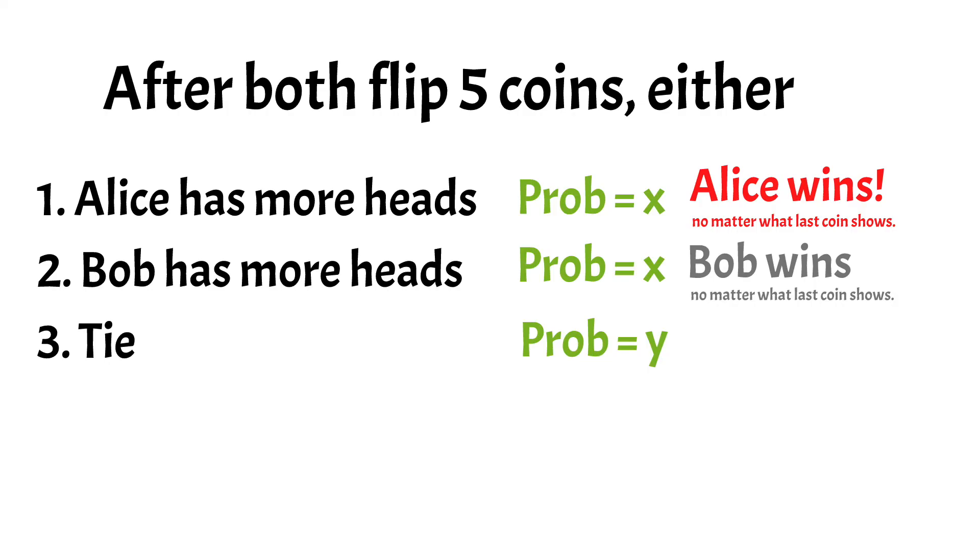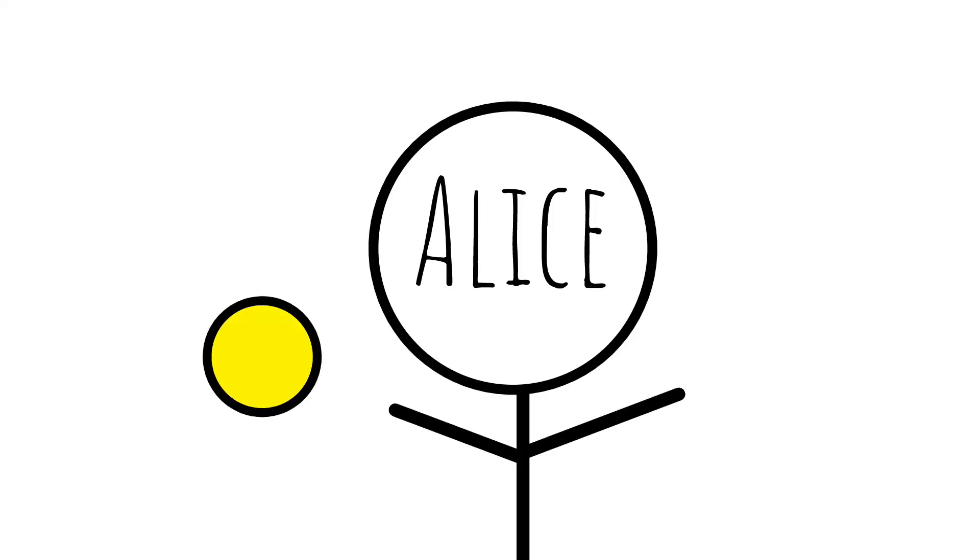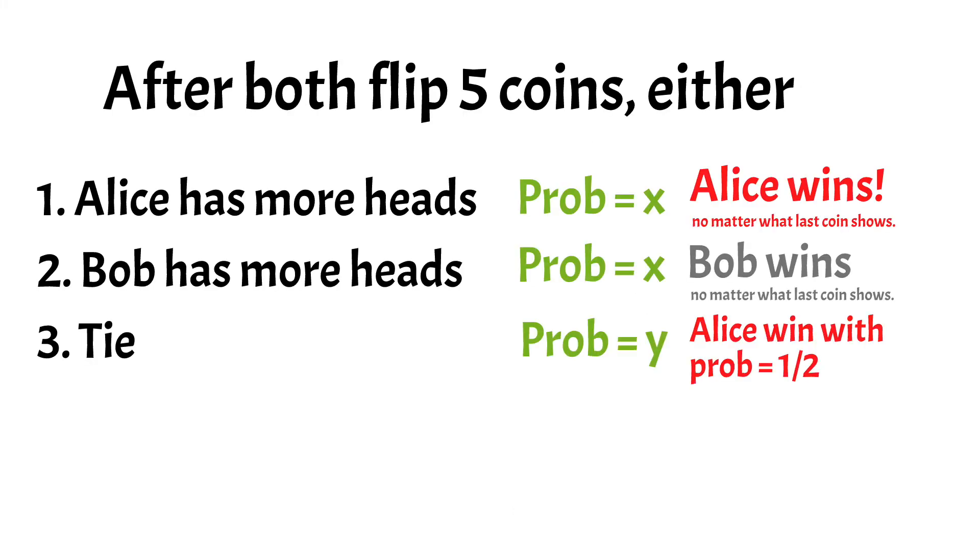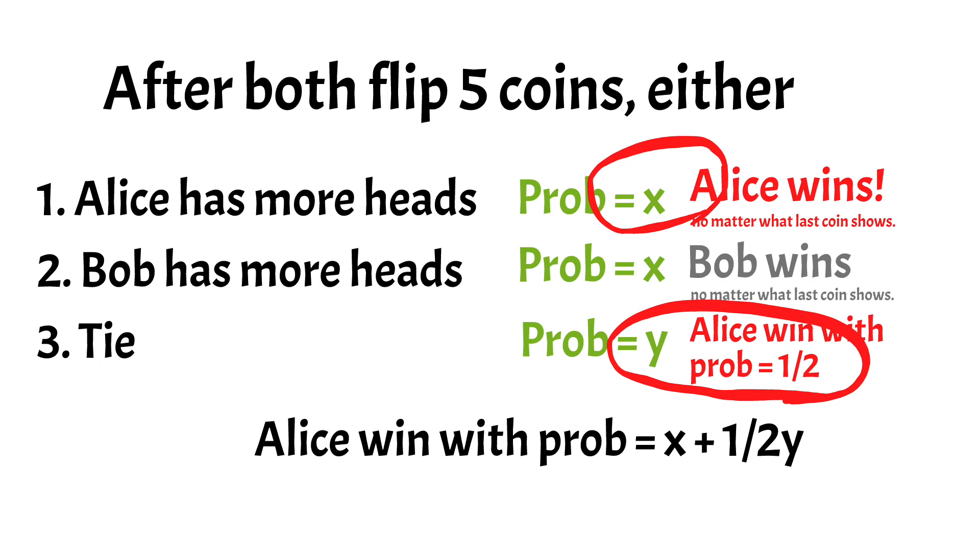So in the third case, now they tie and Alice still has one more coin to go. Now if this shows heads, Alice wins. If it shows tails, Bob wins. So this case will contribute one half y to the probability that Alice wins. So in total, Alice wins with the probability of x plus one half y, which is one half of x plus 2y, which is just one half of 1, which is precisely one half.